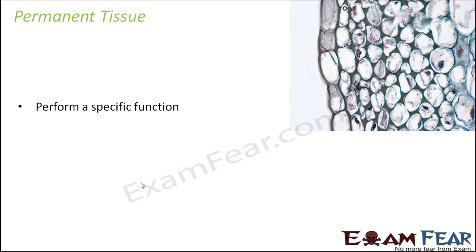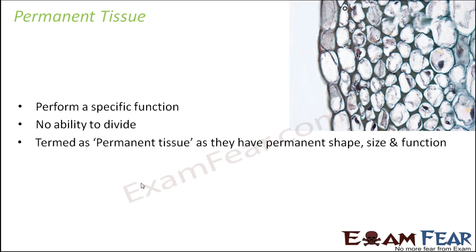Meristematic cells divide and form new cells; some of them remain meristematic and still have the capacity to divide. But some cells get specialized to perform a specific function and thus lose their capacity to divide. Such cells group together to form permanent tissues, which do not have the ability to divide. They are termed permanent tissue because they have a permanent shape, size, and function.